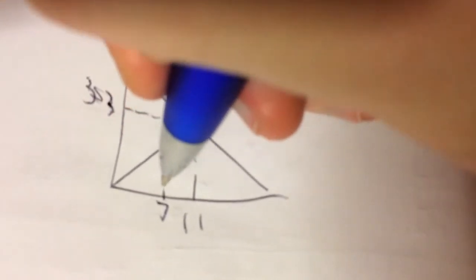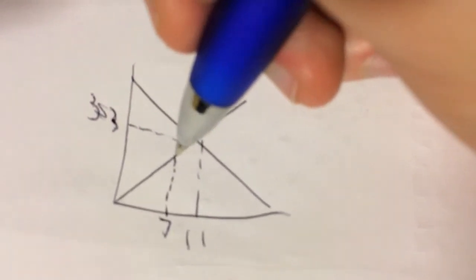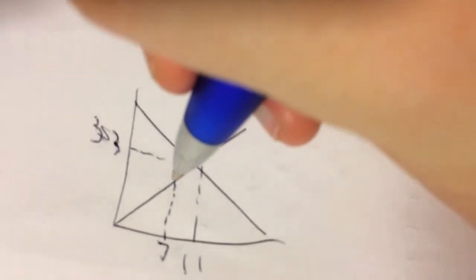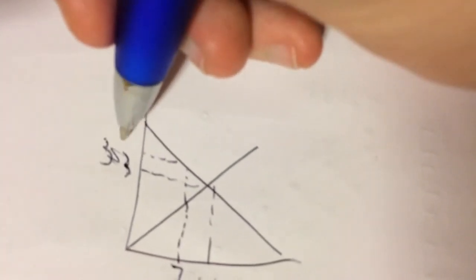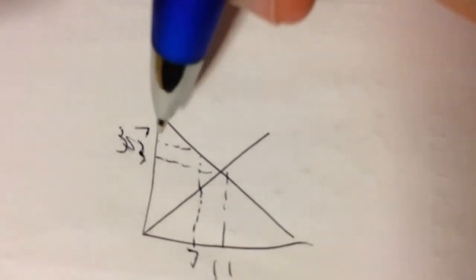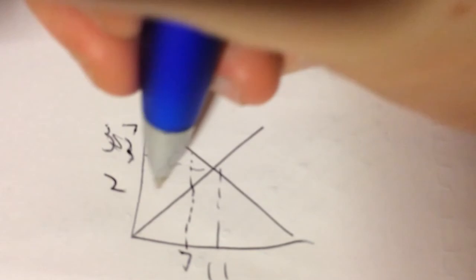With tax, the quantity demanded is 7, and then the price that consumers pay is 7, and the amount that suppliers receive is 2.